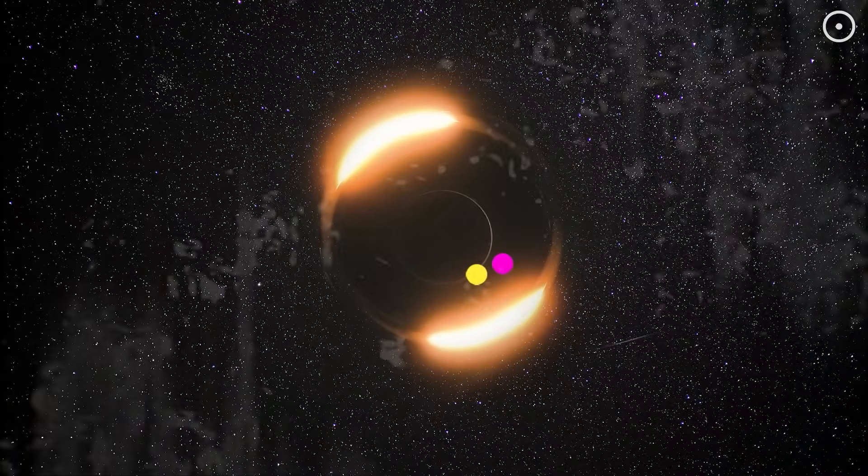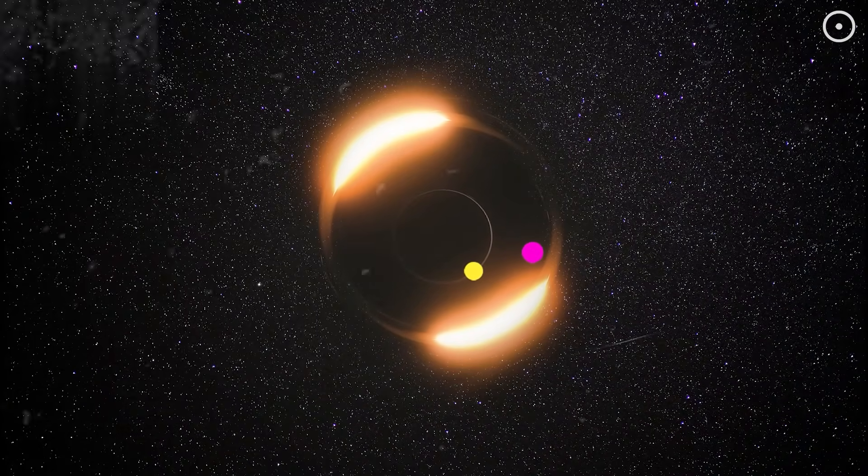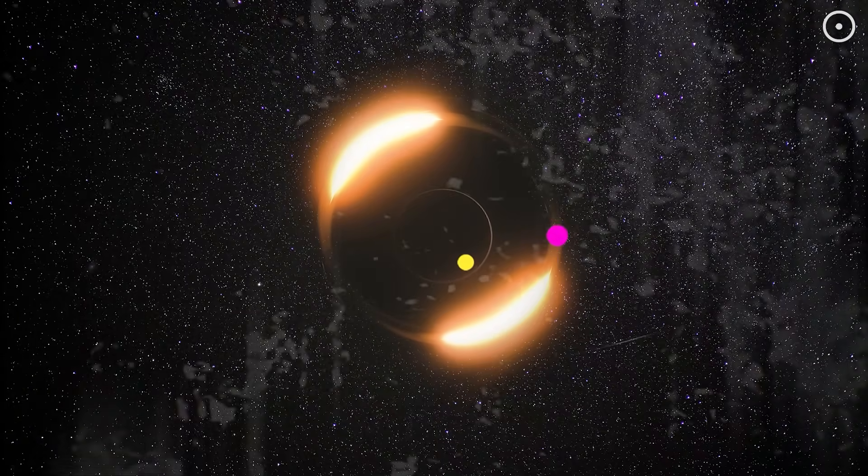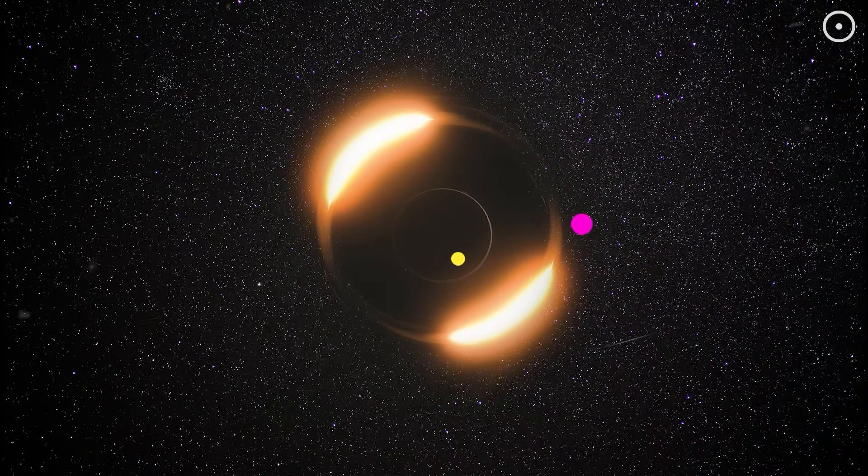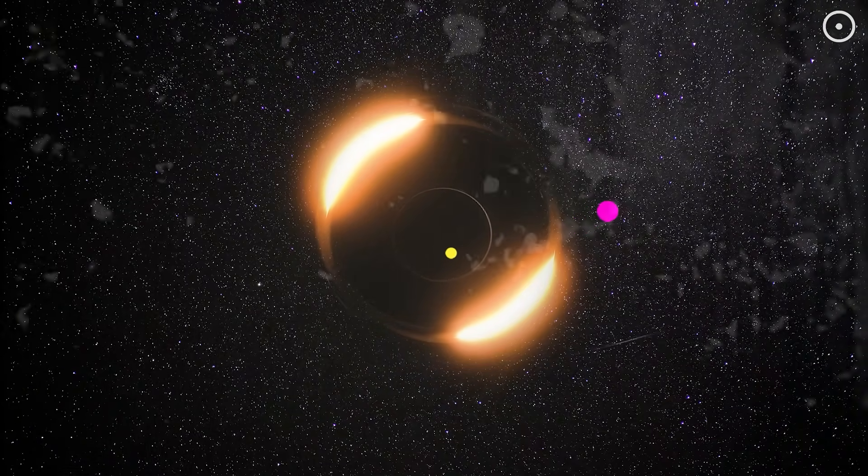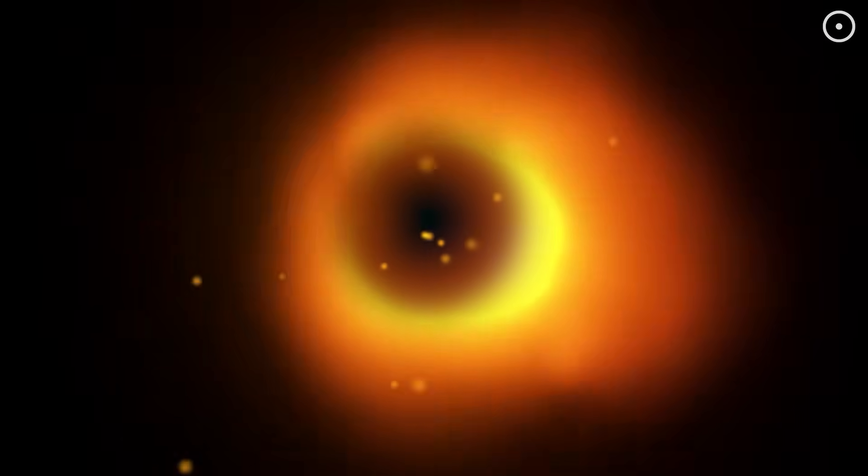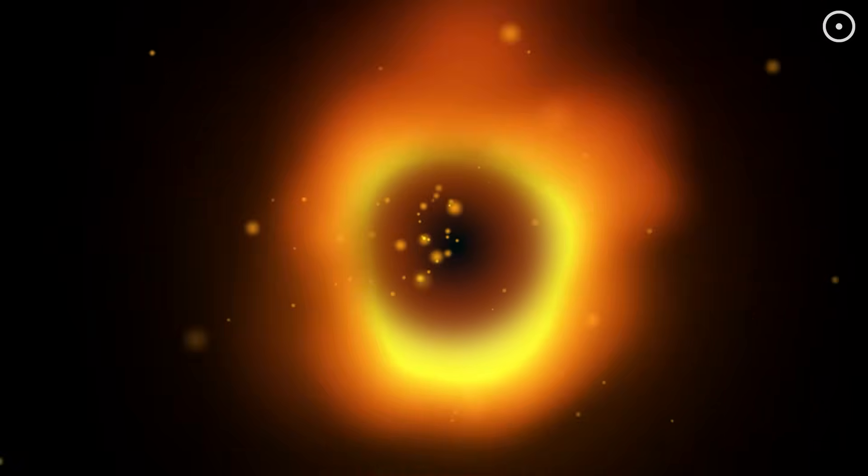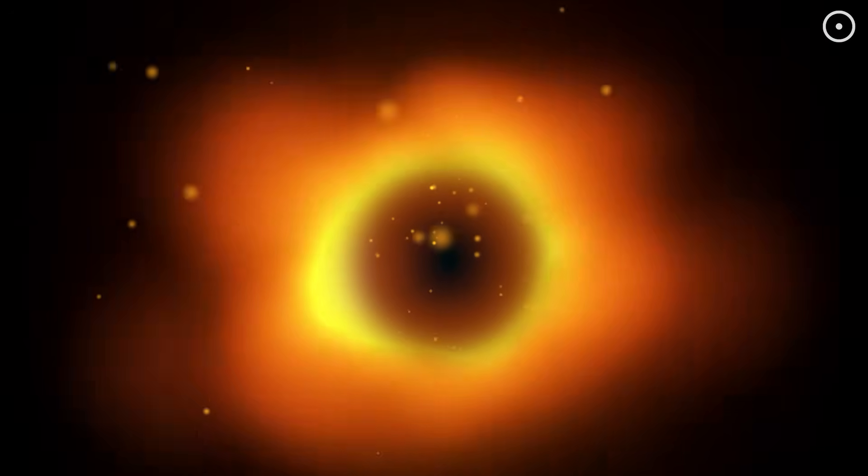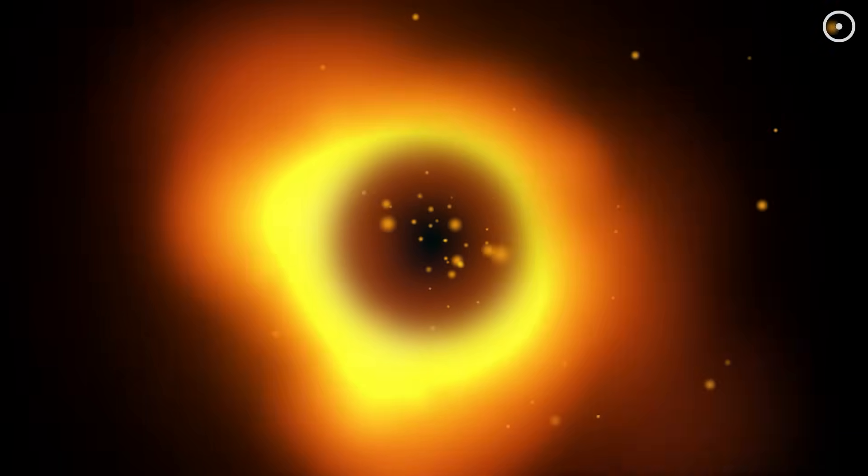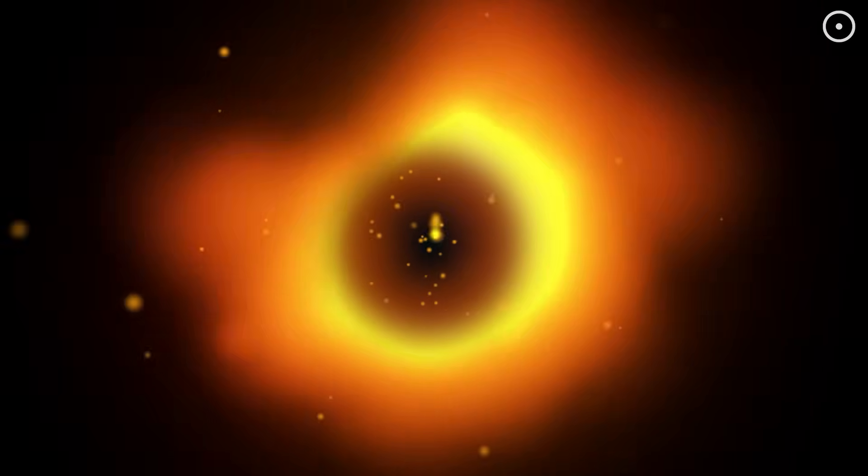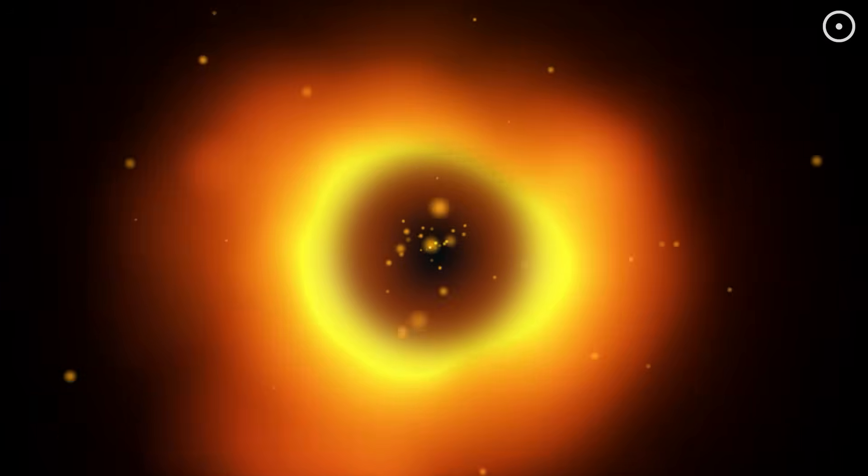Virtual particles, which normally pop in and out of existence, can be split apart by the black hole's gravity. One particle falls in while the other escapes, carrying a tiny bit of the black hole's energy away. Over billions or even trillions of years, this process could cause the black hole to evaporate completely. It's like the black hole is leaking, particle by particle, into the void of space.